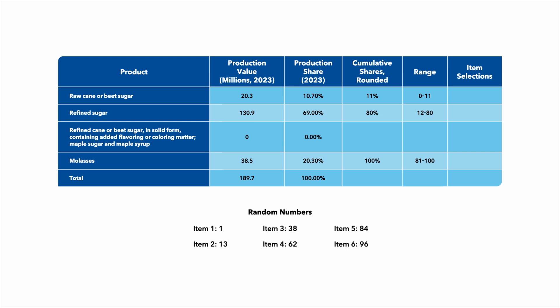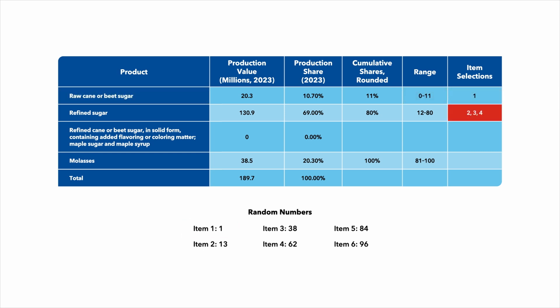Based on these random numbers, we've selected 1 raw cane or beet sugar item since the first random number is 1 and is between 0 and 11. We've chosen 3 refined sugar items as random numbers 13, 38, and 62 are between 12 and 80.